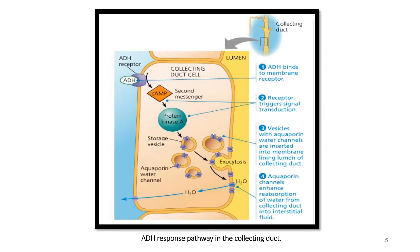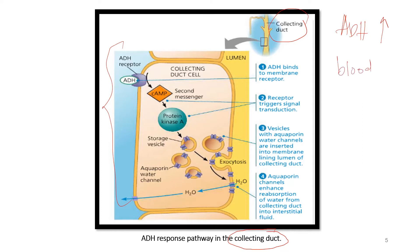This diagram shows the ADH response pathway in the collecting duct. This is what happens in the collecting duct when ADH level increases due to the increase of blood osmolarity. The increment of ADH causes ADH to bind to the membrane receptor.